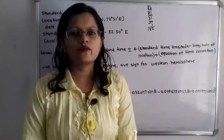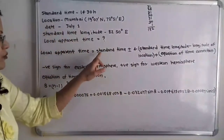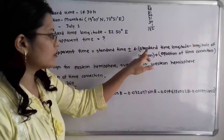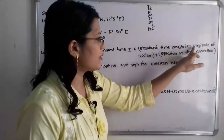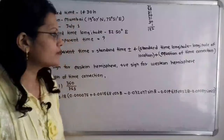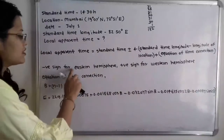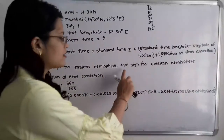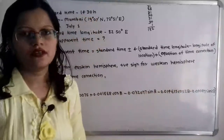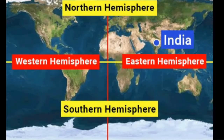The formula to calculate local apparent time is: LAT = Standard Time ± 4 × (Standard Time Longitude − Longitude of Location) + Equation of Time Correction. Here there are two signs — the negative sign is for the eastern hemisphere and the positive sign is for the western hemisphere. Since the location is Mumbai, which is in India, and India is in the eastern hemisphere, we will use the minus sign.